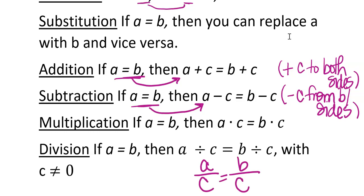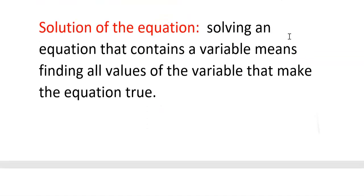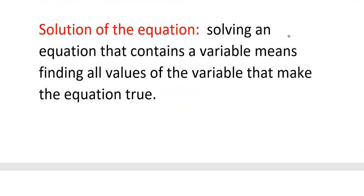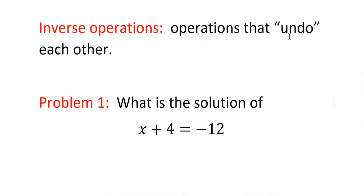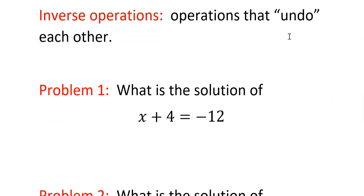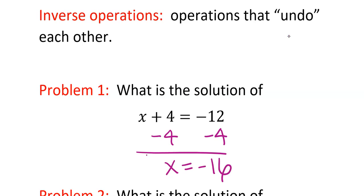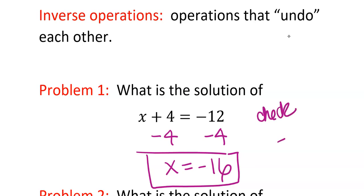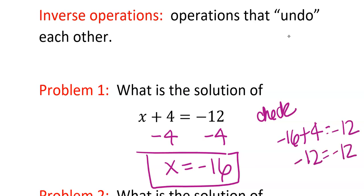The solution of an equation: solving an equation that contains a variable means finding all values of the variable that make the equation true. Inverse operations are operations that undo each other. For instance, if you have an addition equation, to undo addition you subtract 4 from both sides, giving X equals negative 16. You can always check: negative 16 plus 4 equals negative 12, and it does.